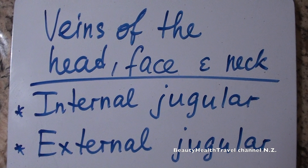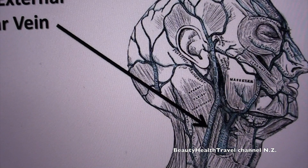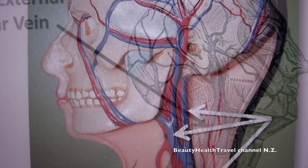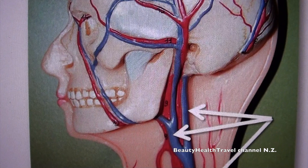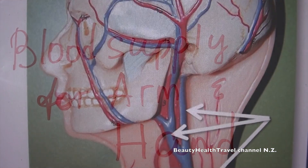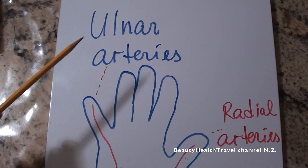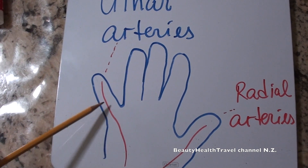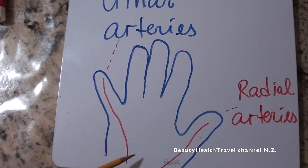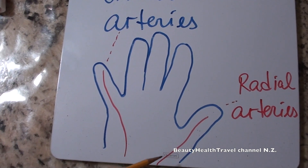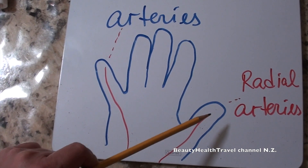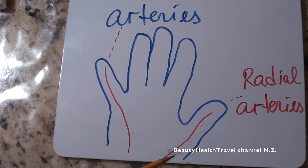Veins of the head, face, and neck include the internal jugular and external jugular veins. For blood supply to the arm and hand: the ulnar artery supplies blood to the middle-finger side of the hand, and the radial artery supplies blood from the thumb side of the hand.